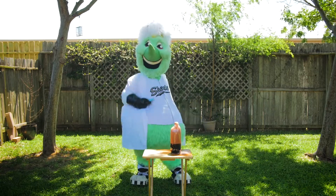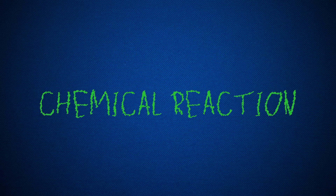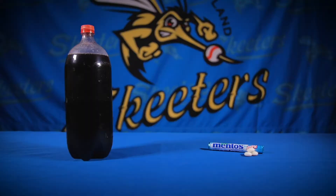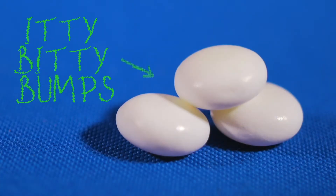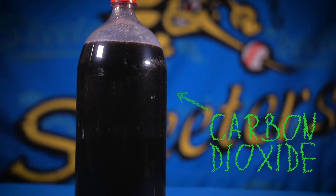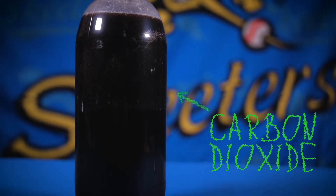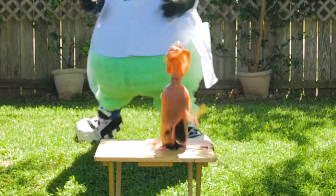Well that was awesome! But why does this happen? According to Scientific American, though this seems like a chemical reaction, it's actually a physical reaction. In simple terms, there are tiny microscopic bumps on the surface of the Mentos. These bumps cause the carbon dioxide in the soda to break its bond with the water, causing a ginormous amount of bubbles which lead to the classic eruption.